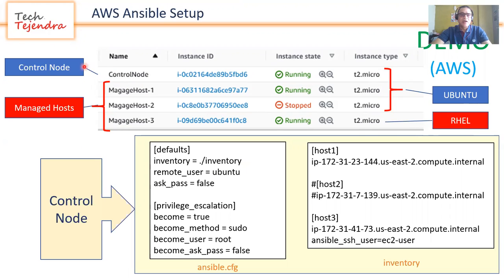On my control node I have two files: the ansible.cfg configuration file and the inventory file. In the inventory you can see host one, host two, and host three.